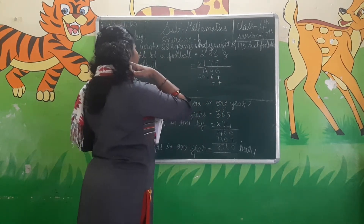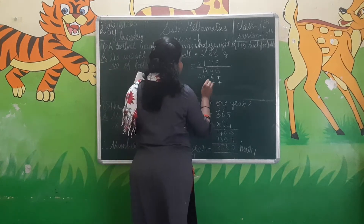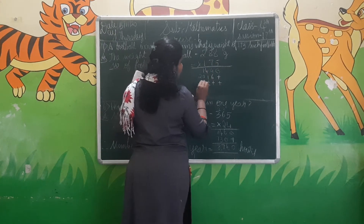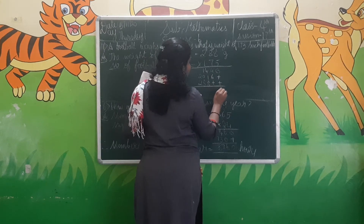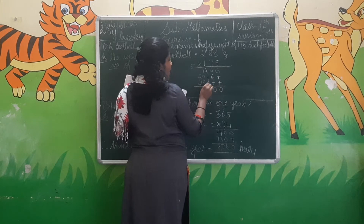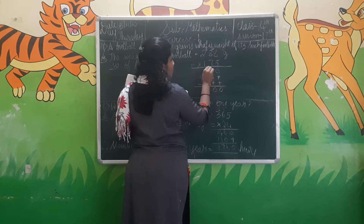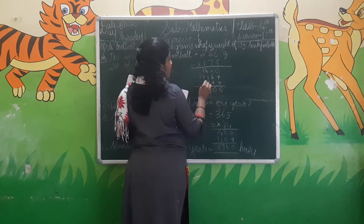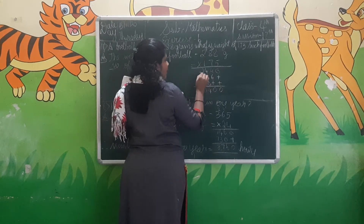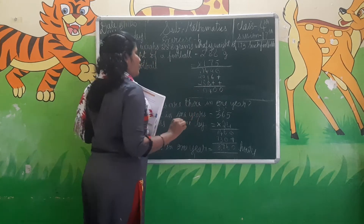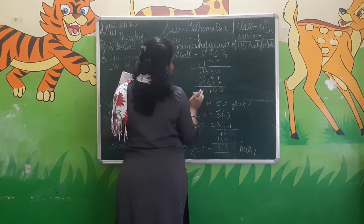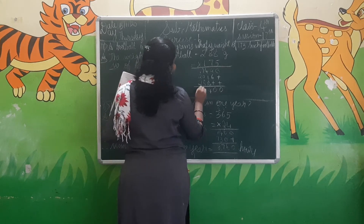1×8 is 8. 1×8 is 8. And 1×2 is 2. Now add it. 0. 6 plus 4 is 10, 1 carry 0 here. 8 plus 1 is 9. 9 plus 1 is 10. 10 plus 4 is 14, 1 carry 4 here. 8 plus 1 is 9. 9 plus 1 is 10, again 1 carry. 2 plus 1 is 3. 3 plus 2 is 5.